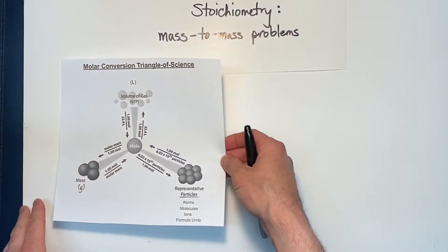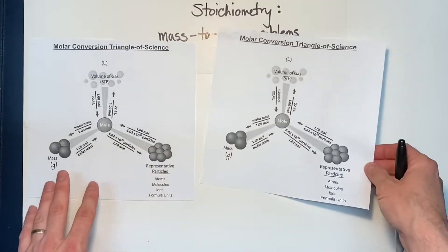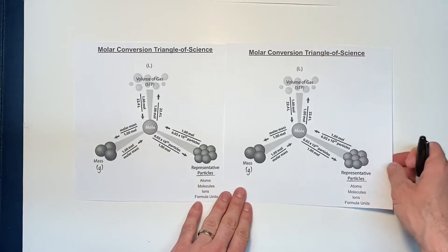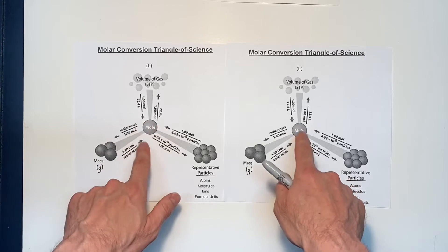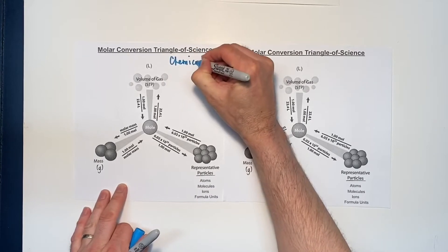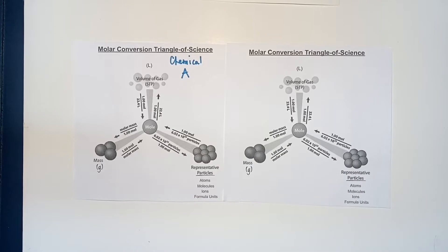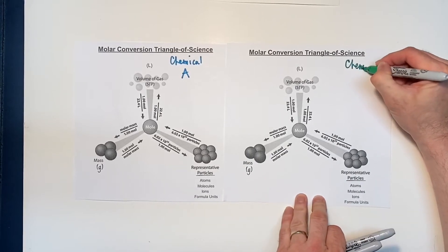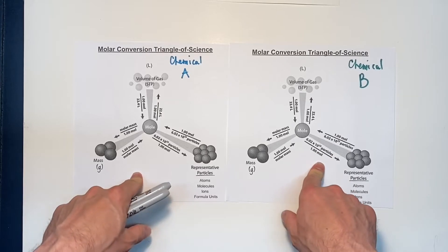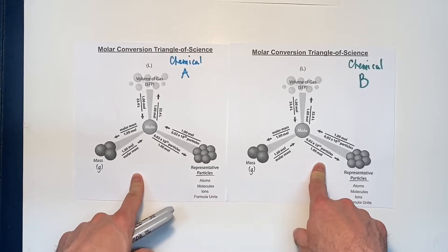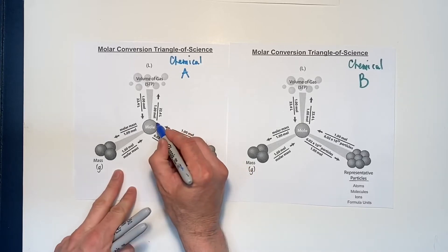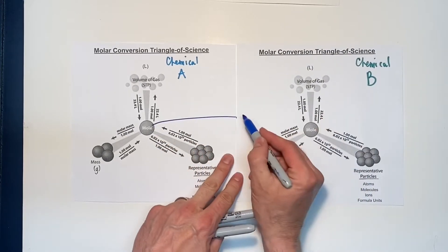Now in stoichiometry we actually use two of these molar conversion triangles of science, because in stoichiometry we compare two different chemicals. We can call one chemical A and the other triangle is for chemical B. These two chemicals are in the same balanced chemical equation and are related through their mole-to-mole ratios.